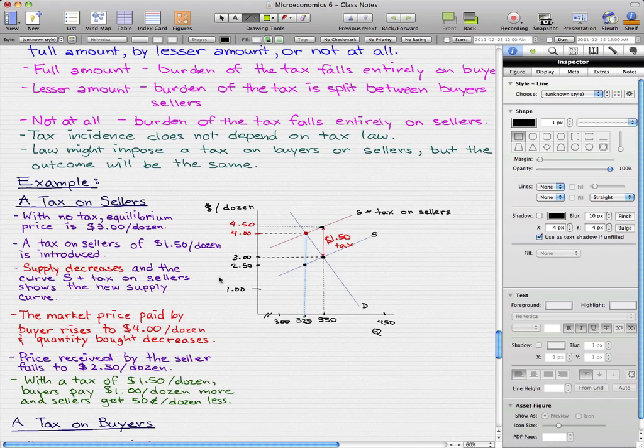The price actually received by the seller falls to $2.50 per dozen. You can see here that with the tax of $1.50 per dozen, the buyer actually has to pay $1 more, and the seller actually gets $0.50 per dozen less.